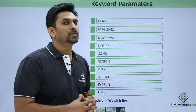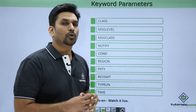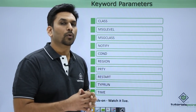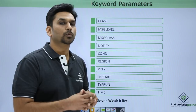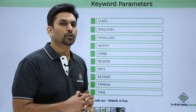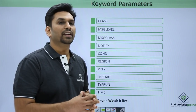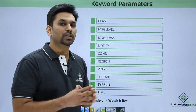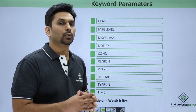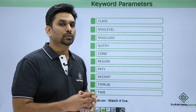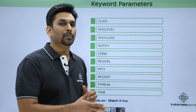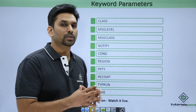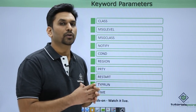Next we have keyword parameters, starting with CLASS. CLASS specifies the nature of the job — whether a job should be executed for a long time or a short time. The valid classes are from A to Z and 0 to 9, and they are configured at setup time to define which class has higher or lower priority.